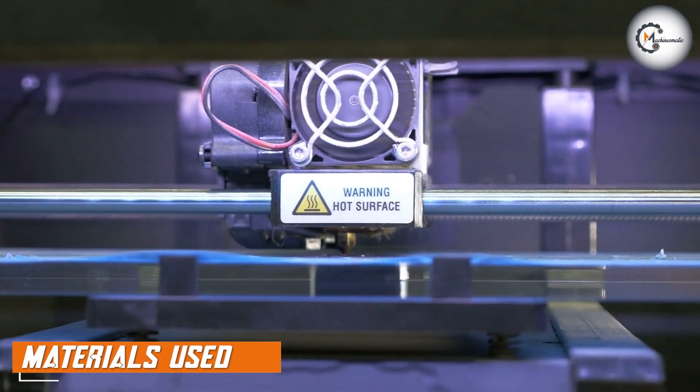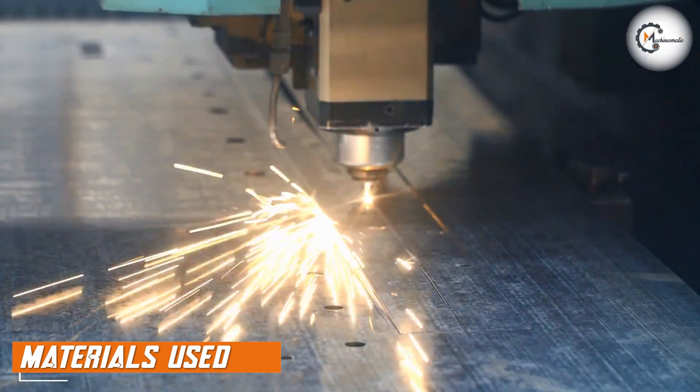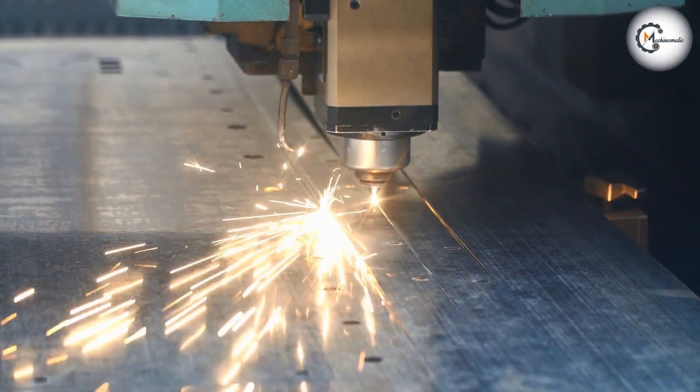3D printers typically work with materials such as plastic, resin, or metal powders. Laser cutters can work with a wide range of materials, including wood, acrylic, leather, and even some metals.